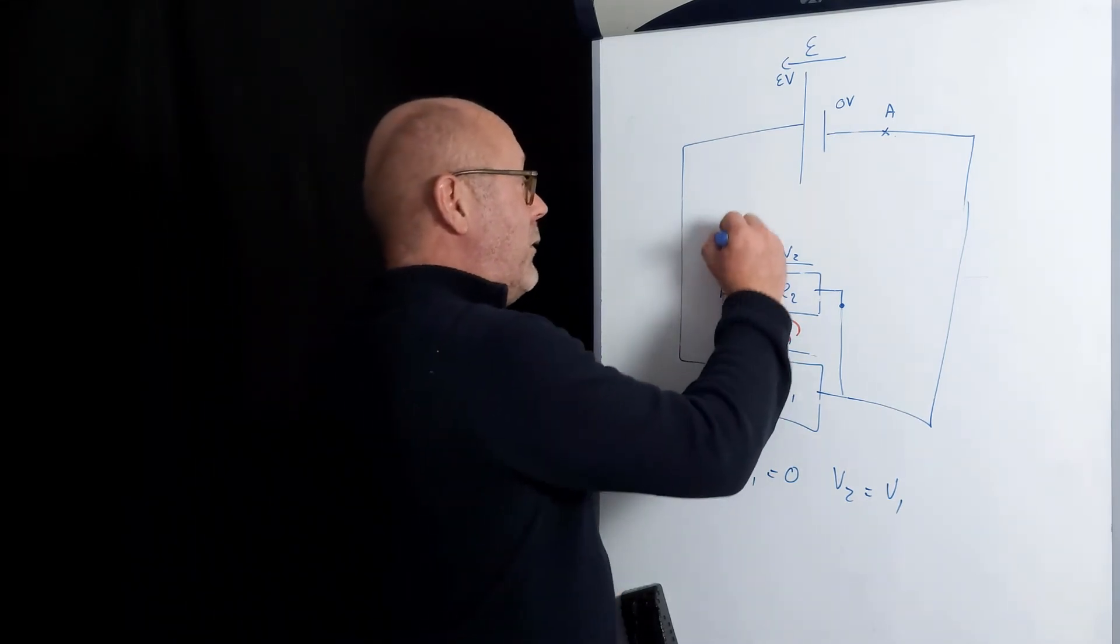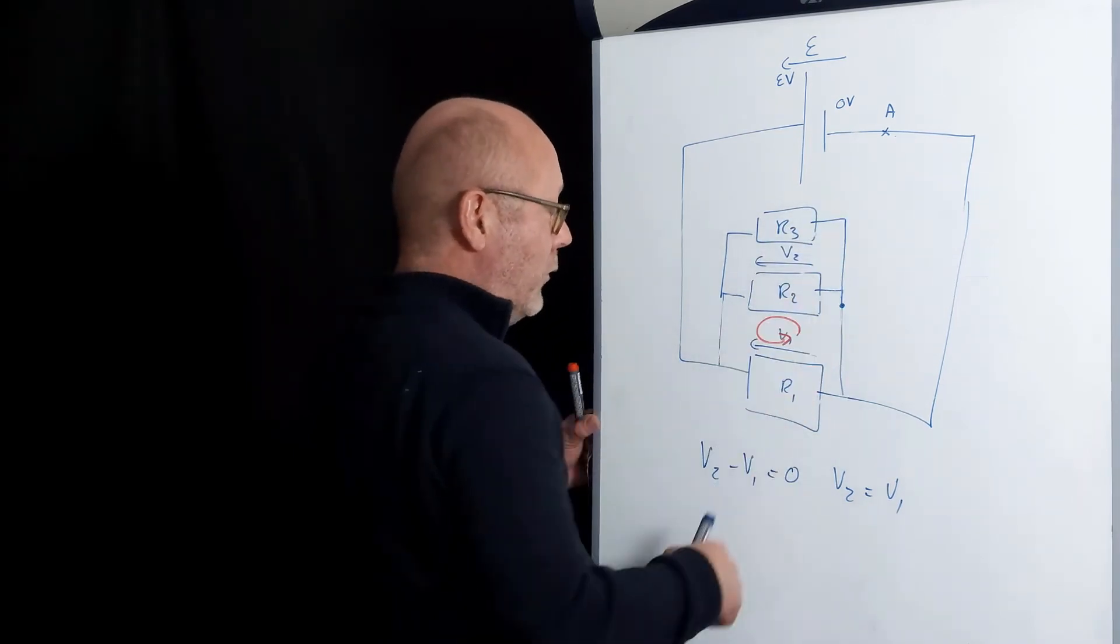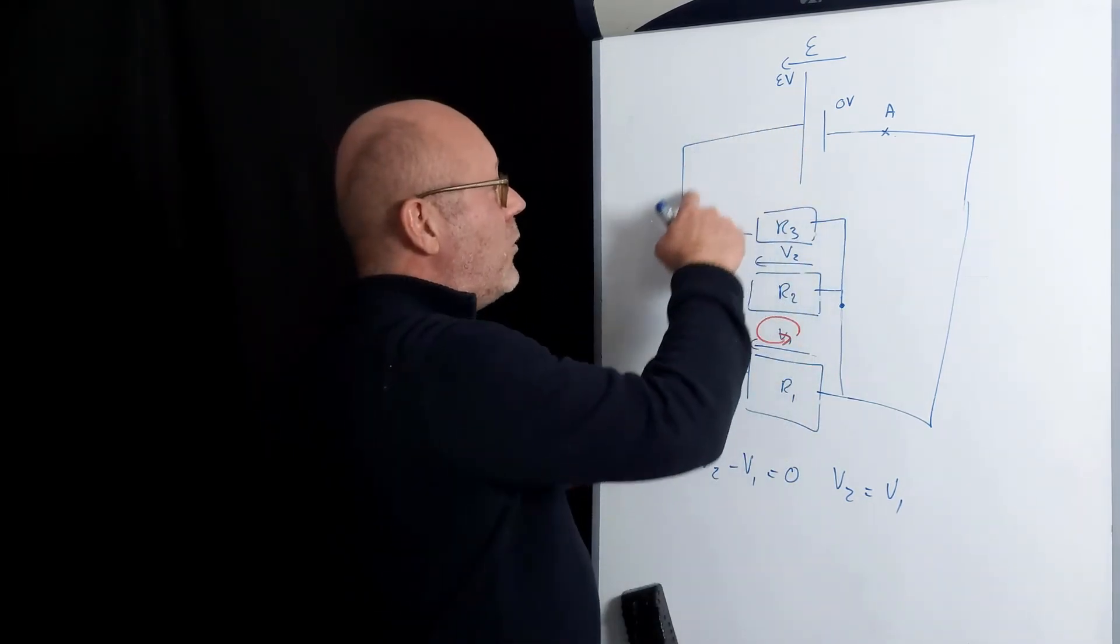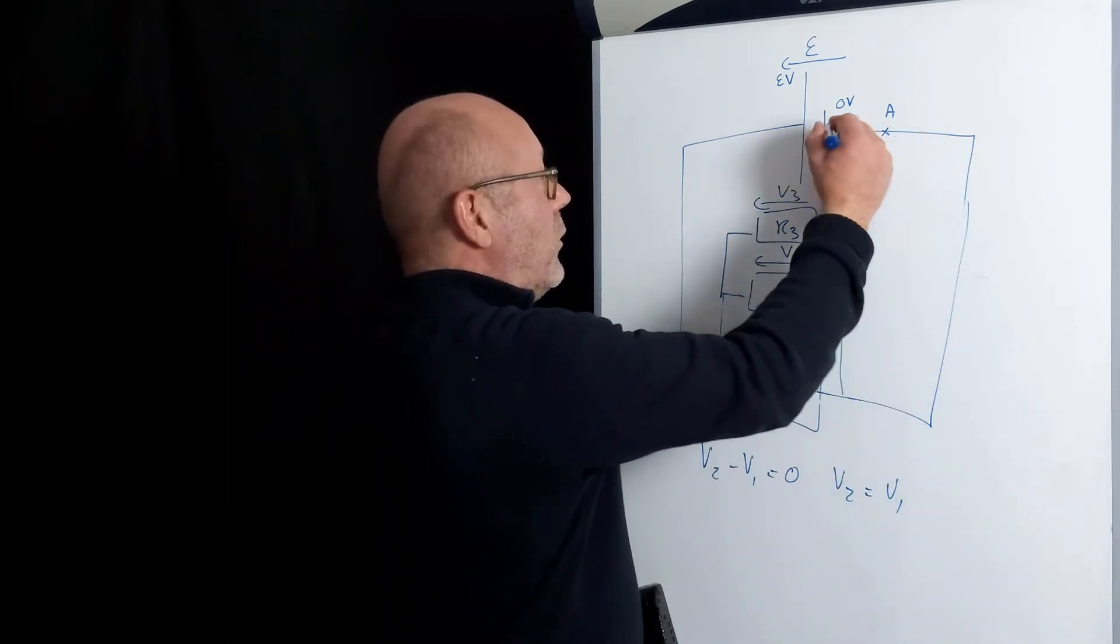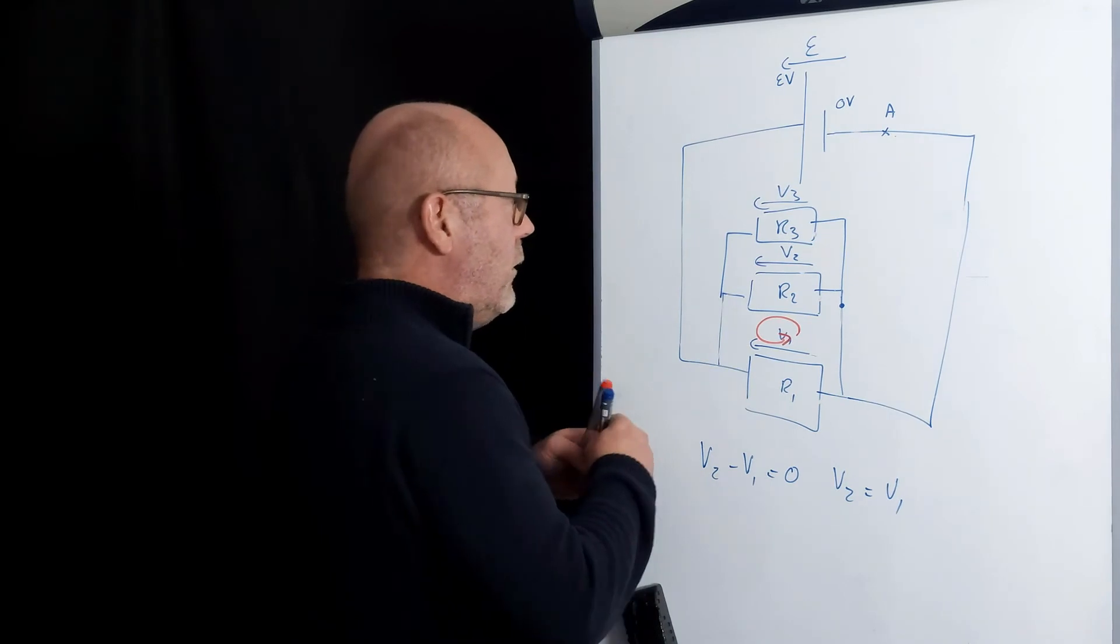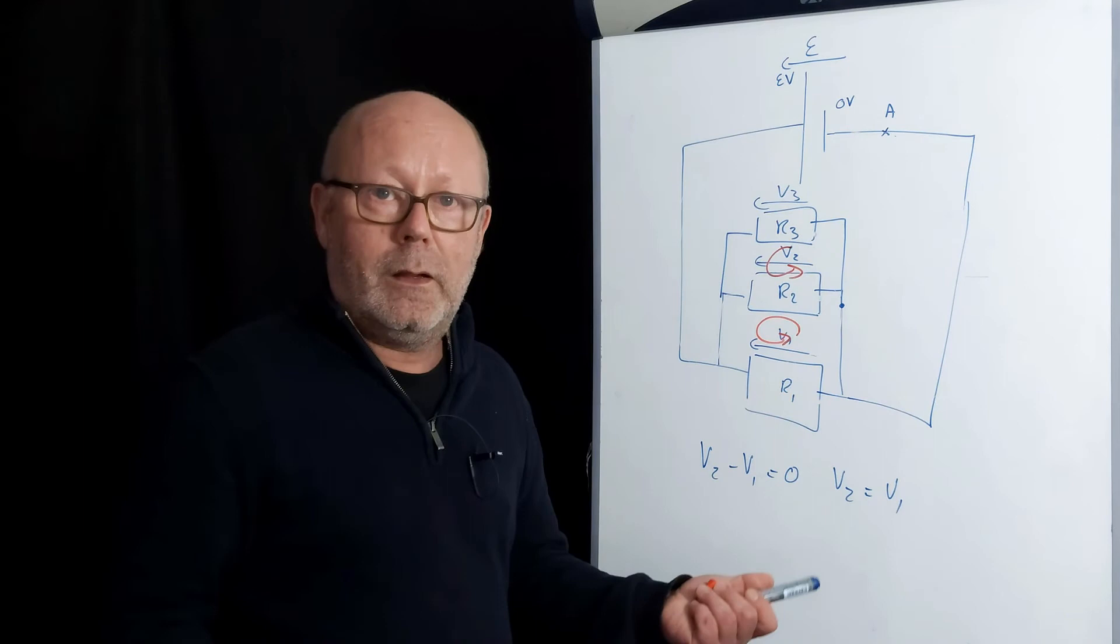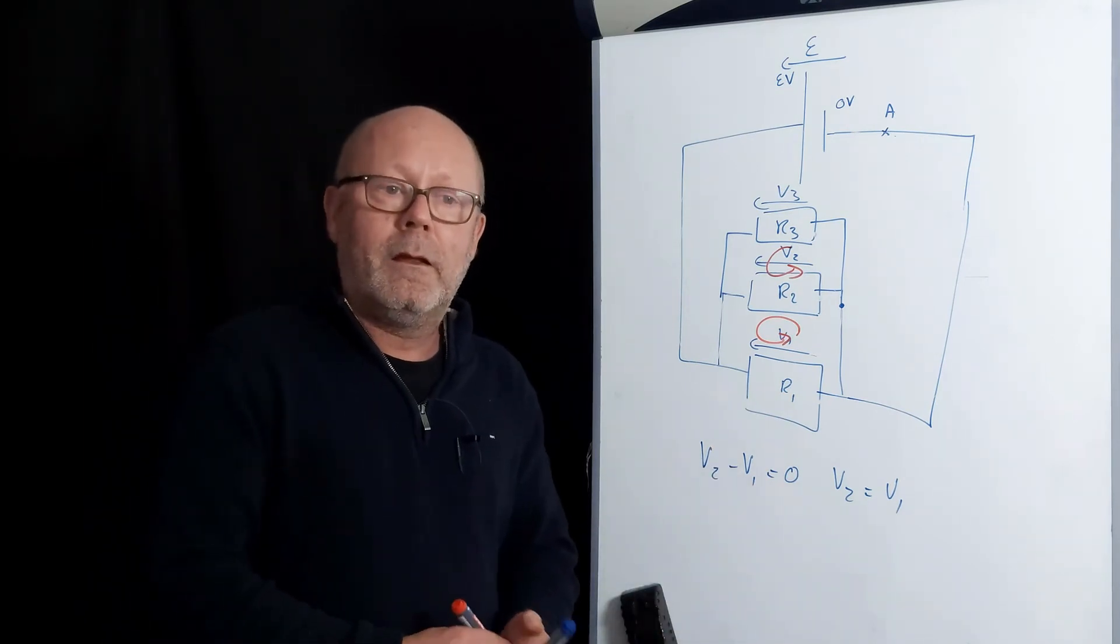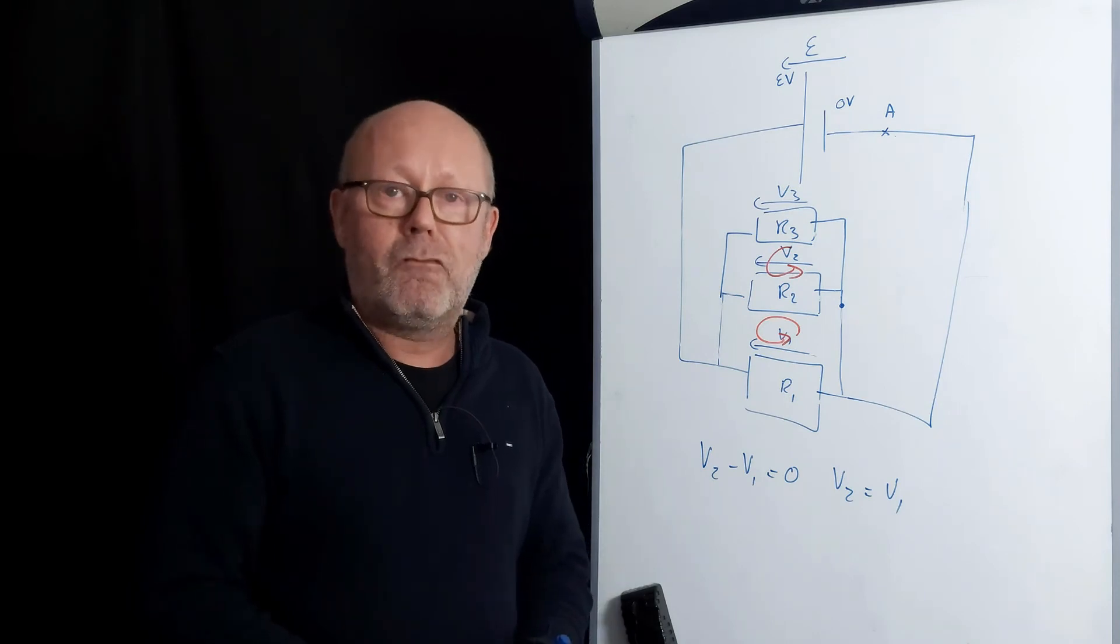I could put a third resistor if I wanted to. And I would also find that ε minus V3 equals zero. So V3 would be equal to V2 and V1. Or I could use this loop. V3 minus V2 equals zero. So V2 equals V3, which is also equal to V1.